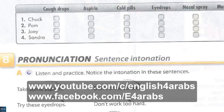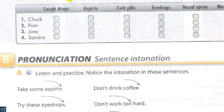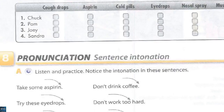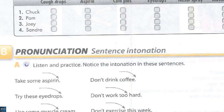Exercise 7. Listening. Let's take a look. Listen to Dr. Young talk to four other patients. What does she give them? Check the correct medications. You will listen to four persons: Chuck, Pam, Joey, Sandra. Then choose the medicine: cough drops, aspirin, cold pills, eye drops, nasal spray, muscle cream.